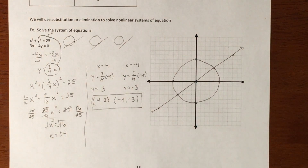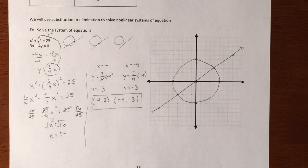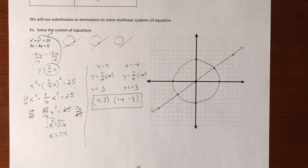That was problem one. We're going to do a couple others because there are some no-solution types of problems — how do we know that's going to happen, and what does it look like? We'll get there.